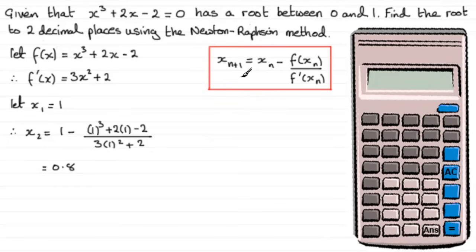Now that we have x₂ we can get a third approximation to the root, x₃. Because if n = 2, x₃ will equal x₂ minus f(x₂) divided by f'(x₂). x₂ being 0.8, we have 0.8 minus [0.8³ + 2(0.8) - 2] all divided by [3(0.8)² + 2]. If you work this out you'll find you get 0.77142 and so on.